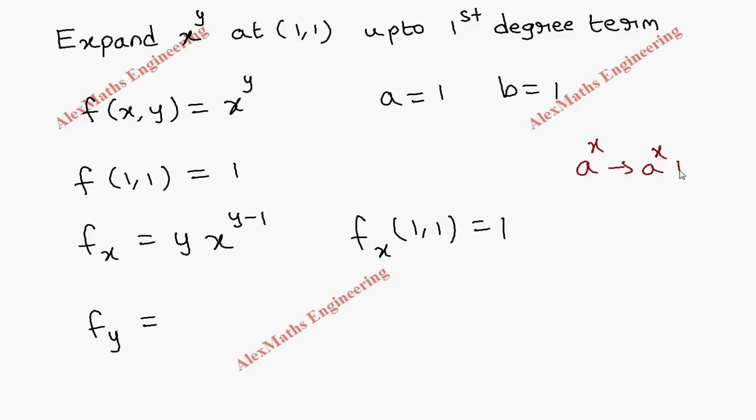log a. Now this x is like a constant a, so it is x^y log x, because x is a constant like a. We are doing partial differentiation with respect to y. So fy of (1,1)